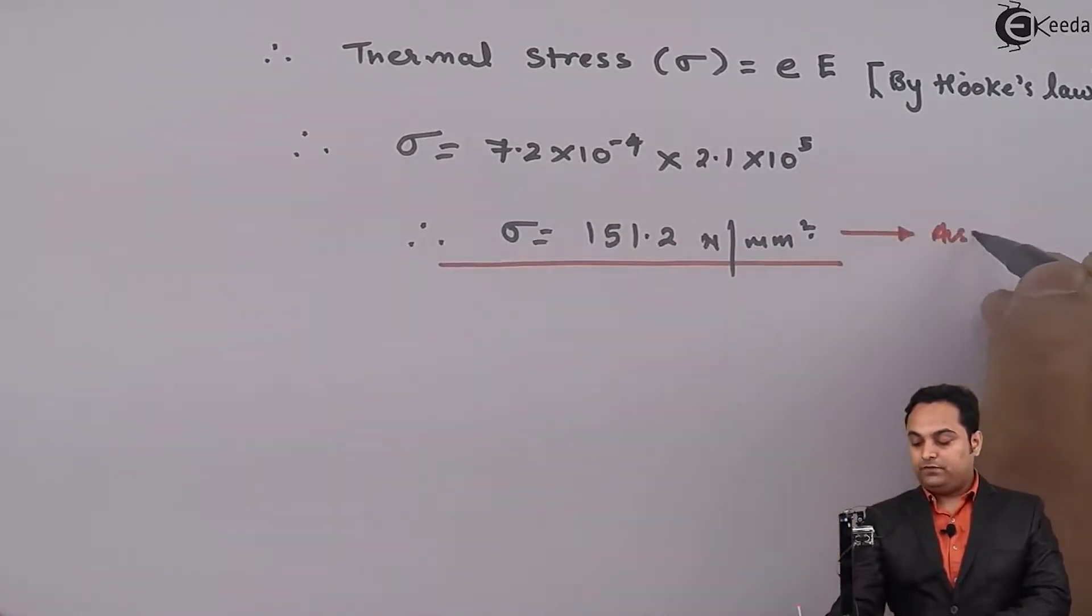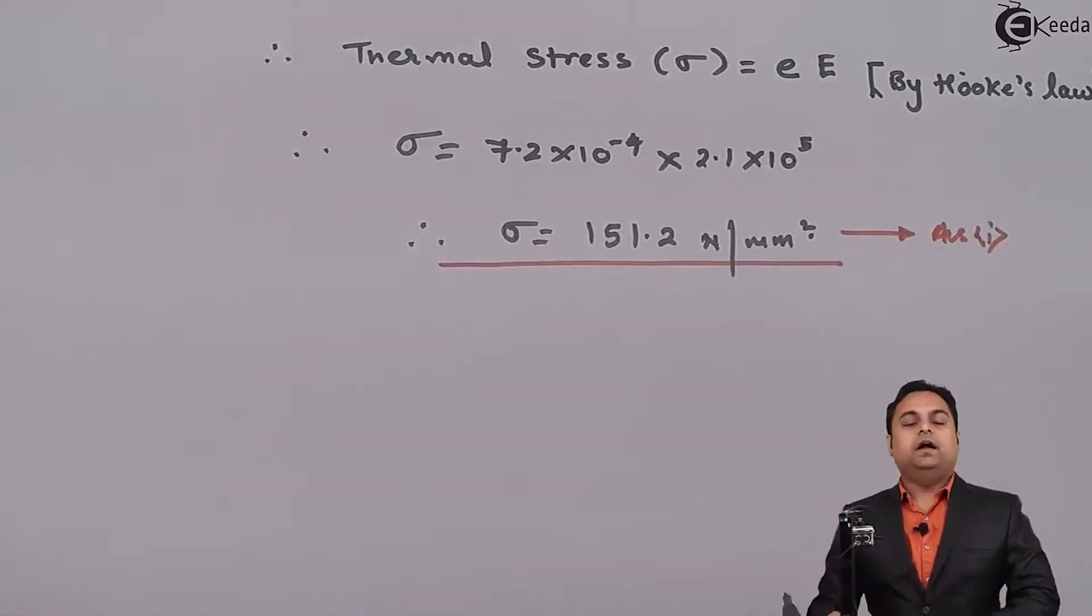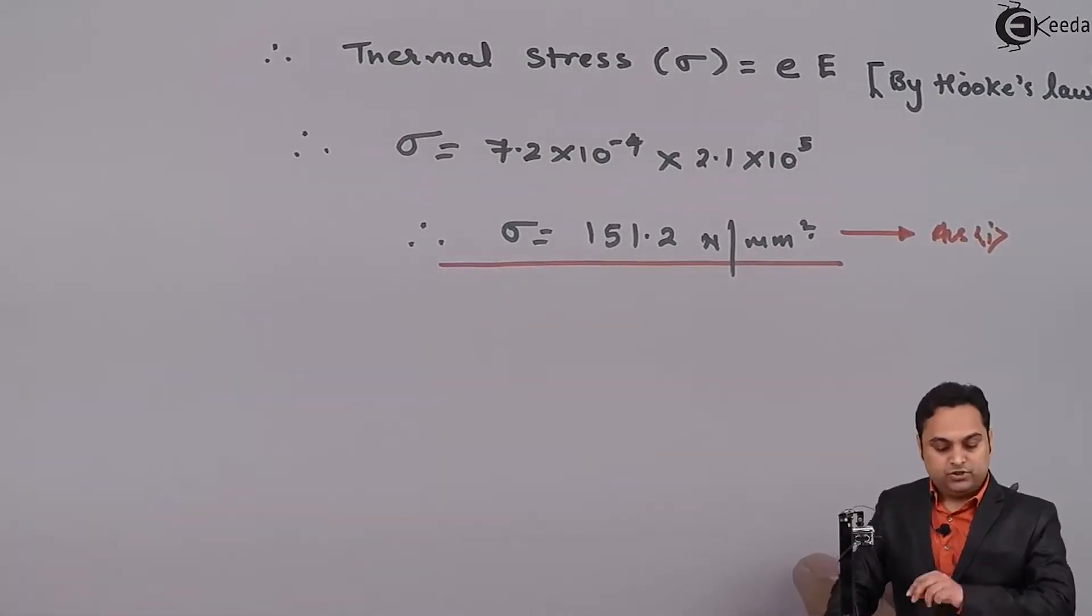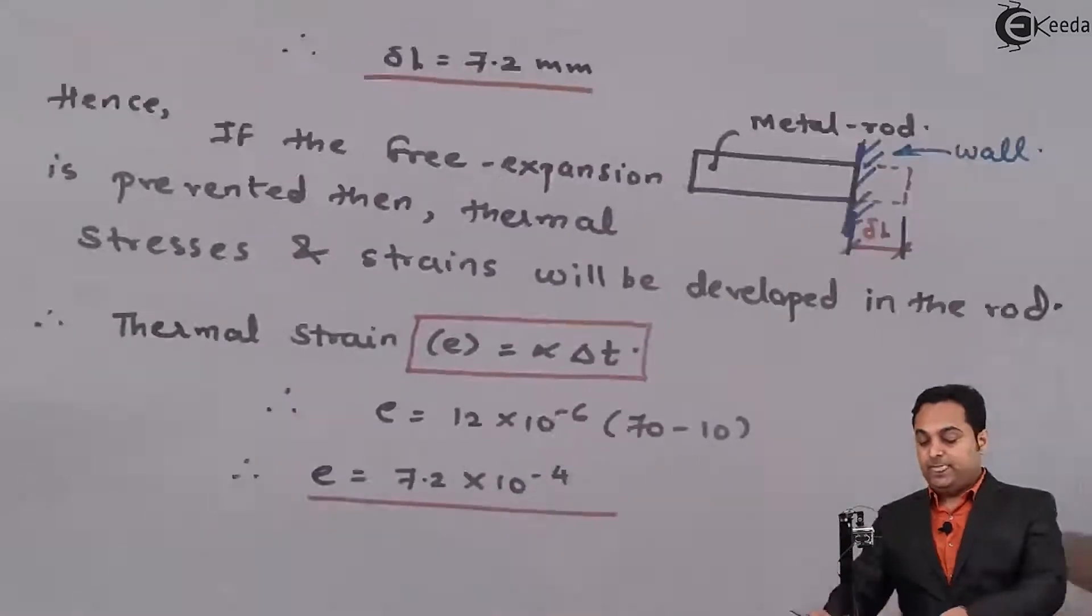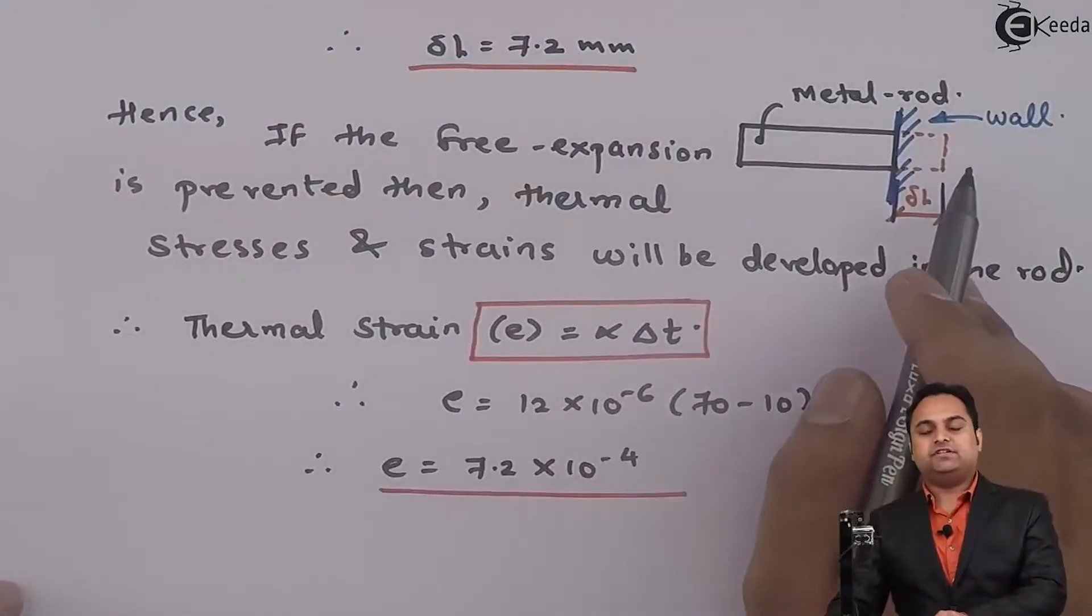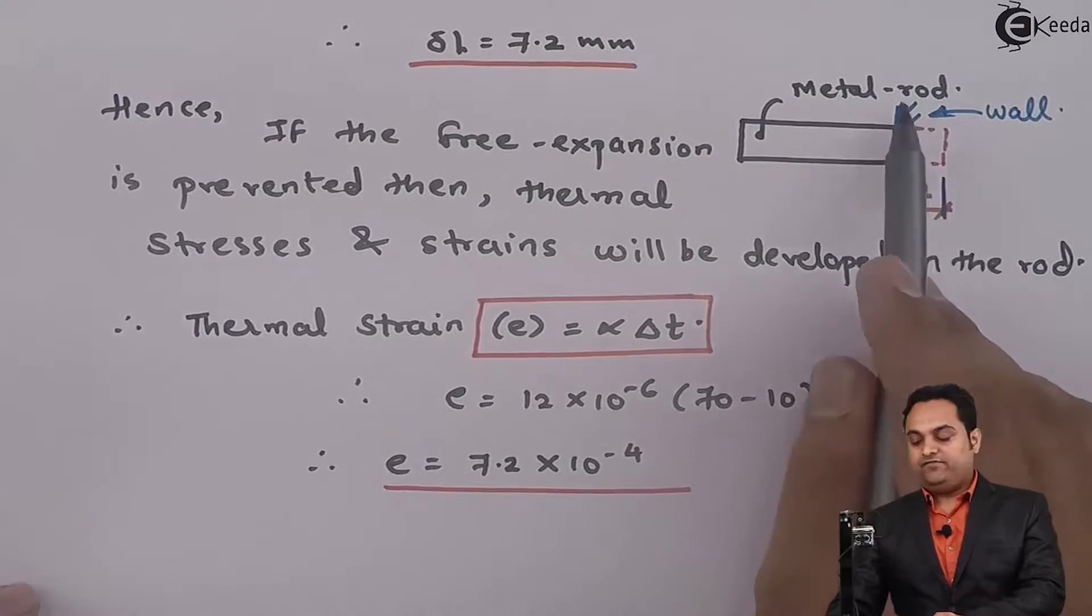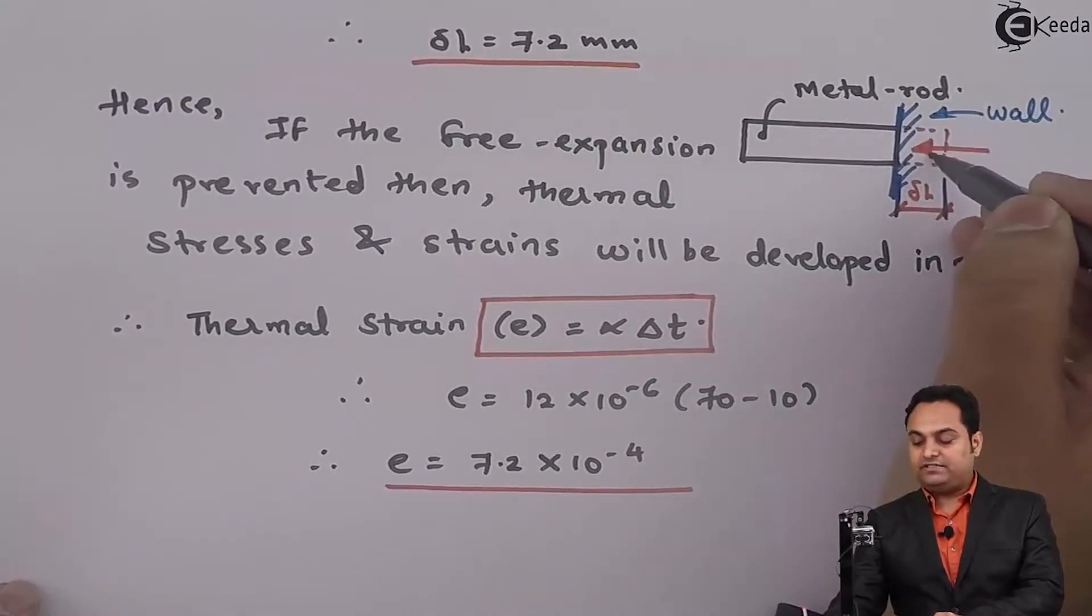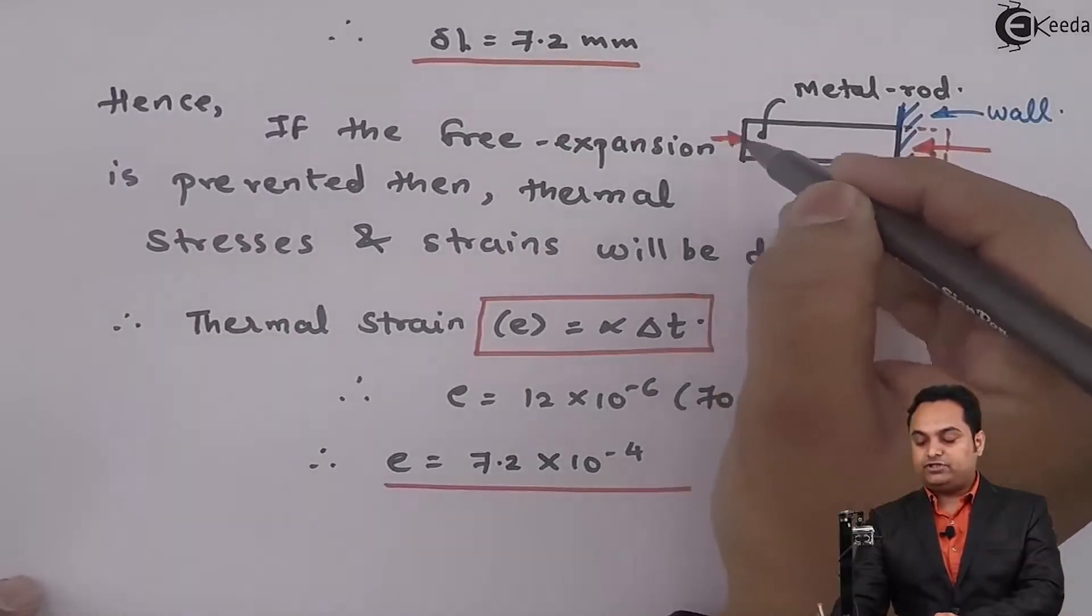So, this is my answer and in the problem, they are also saying to calculate the nature of stress. So, as we can see that, when the metal rod was freely expanding, stress induced was zero. But, if we are attaching a wall here, it means there is a force acting from the wall towards the metal rod and that force is compressive.